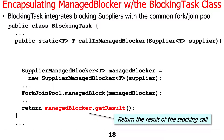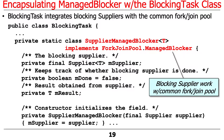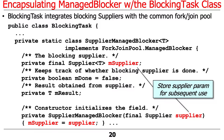After the manageBlock call returns, we just call getResult to retrieve the result. SupplierManagedBlocker is a private static class nested inside BlockingTask that encapsulates a supplier to work with the common fork join pool. It implements ForkJoinPool.ManagedBlocker. The constructor takes a supplier and stashes it in a private final field, and there's a boolean to track whether we're done and a field to store the result.